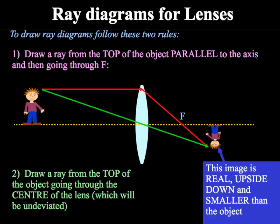We then draw a ray from the top of the object going through the centre of the lens on the axis and then straight through. Where these two points meet will be the top of the image.